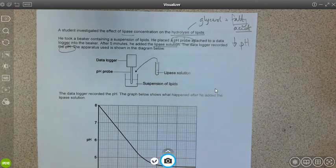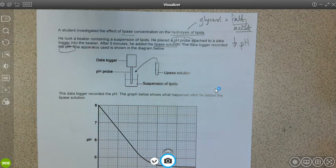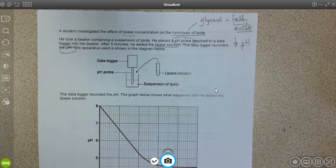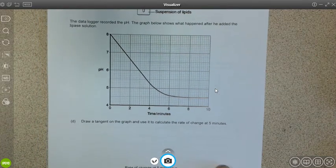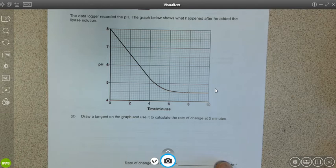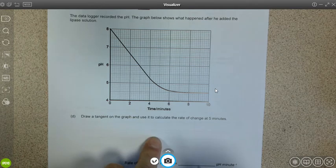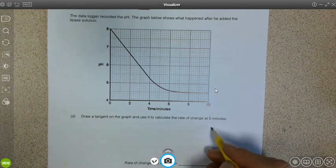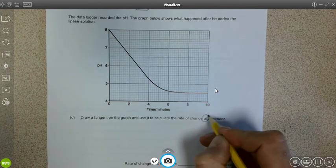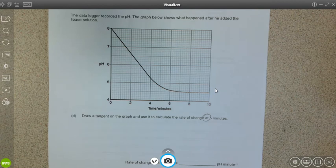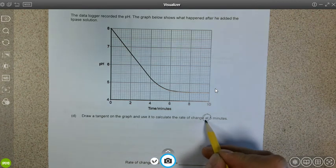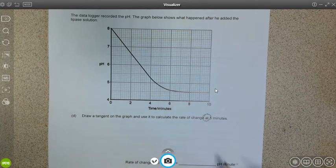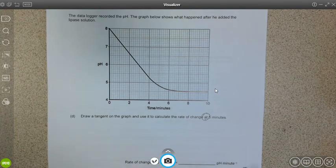You'll probably realize that the hydrolysis of lipids produces glycerol but also fatty acids, and it's those fatty acids which will lower the pH, and this is what's being measured in this investigation. If we have a look at the question here, draw a tangent on the graph and use it to calculate the rate of change again at five minutes.